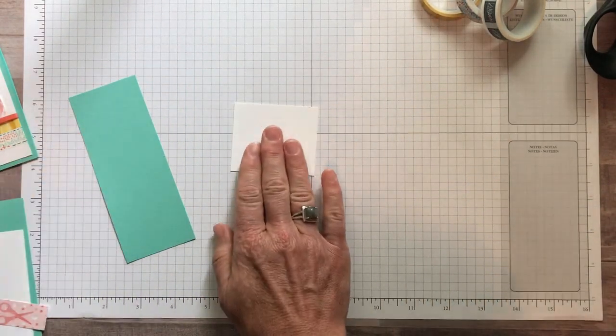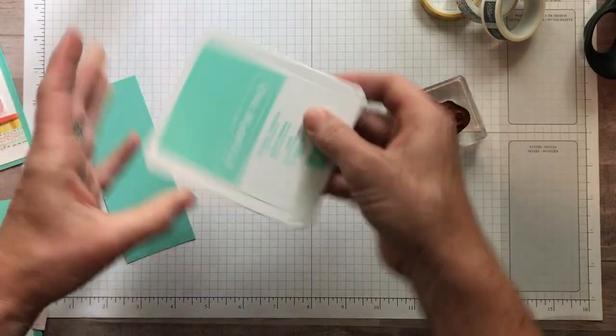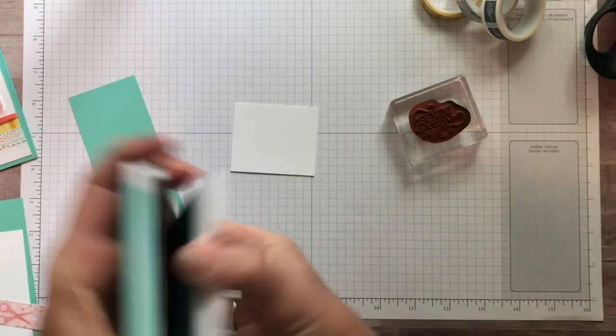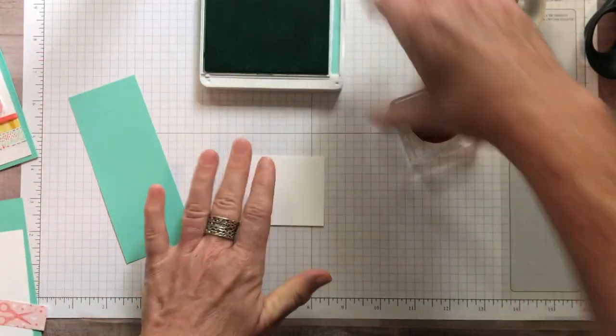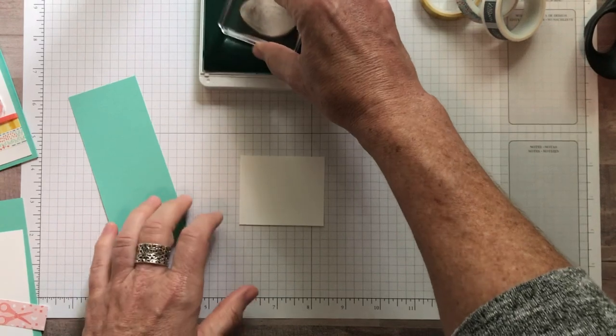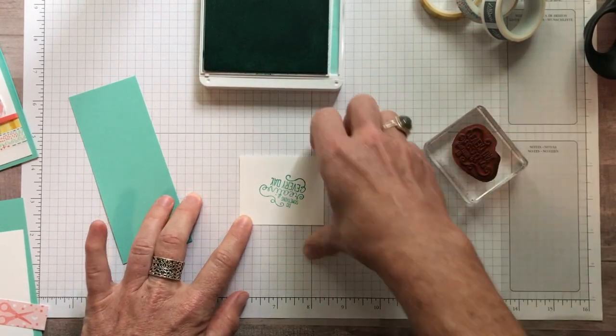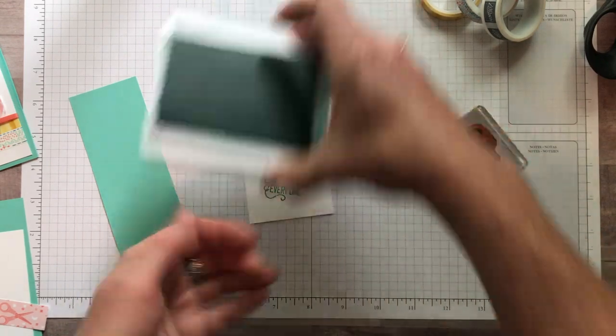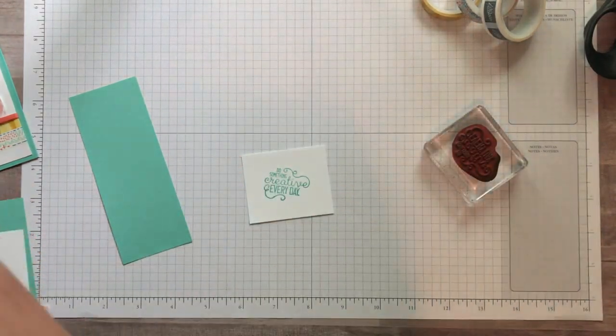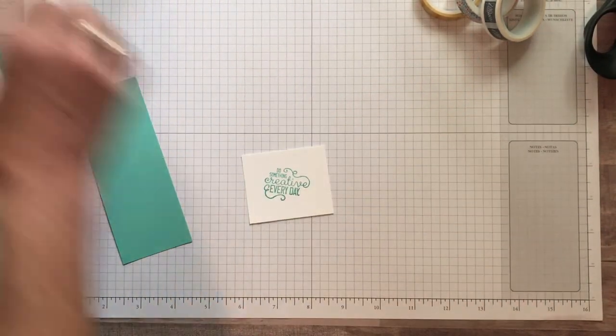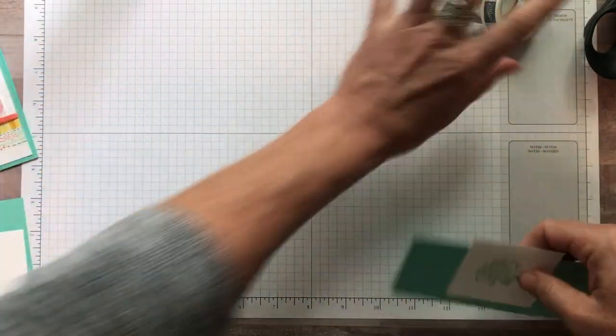I have a scrap piece of Whisper White cardstock and my Coastal Cabana ink pad. I'm just going to pop that open and we've got our Do Something Creative Everyday stamp. Nice easy tap tap tap, upside down but no big deal because I am going to run that through the Big Shot. That didn't really matter whether I did it the right way or the wrong way.